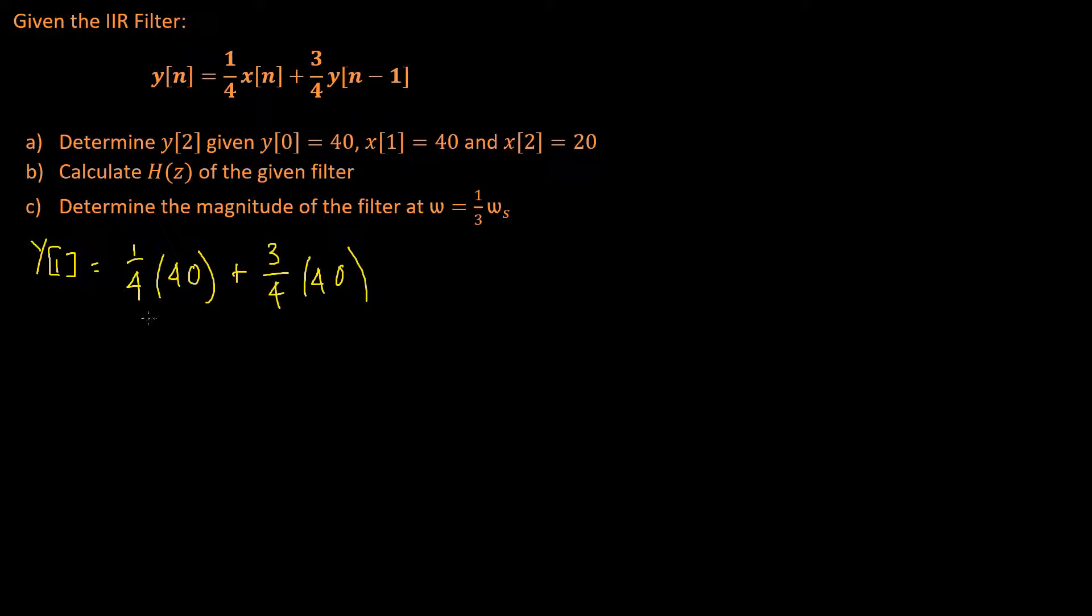Okay, so working that one out, this one will cancel to 10, this one will cancel to 30, and then y of 1 is equal to 40. Nice and simple.